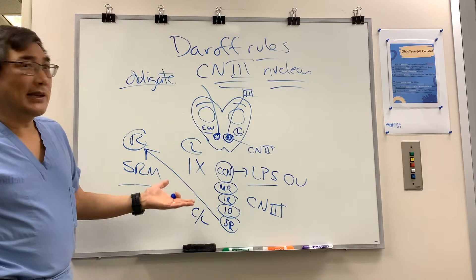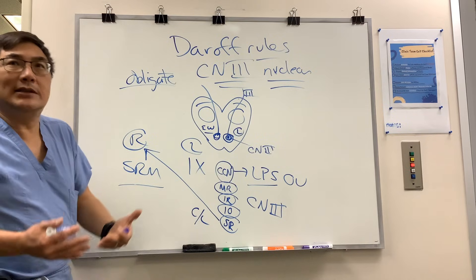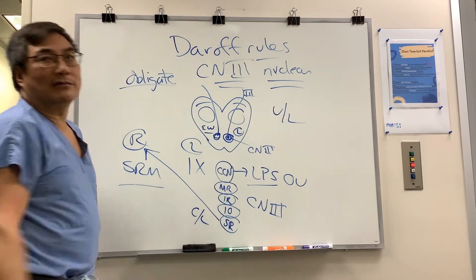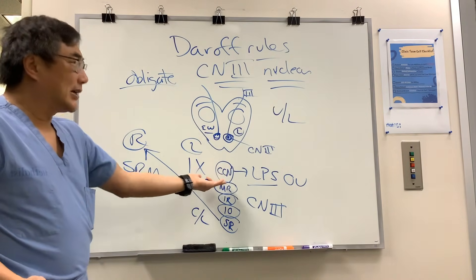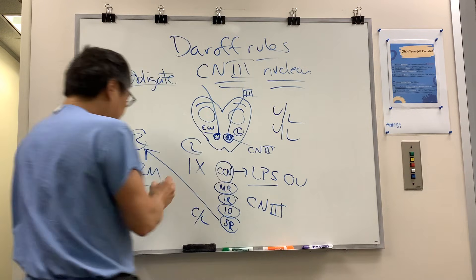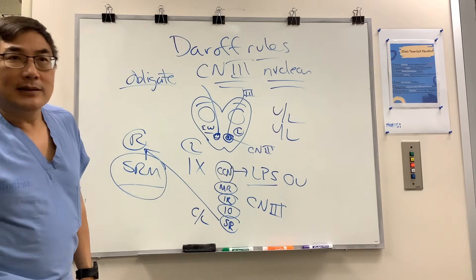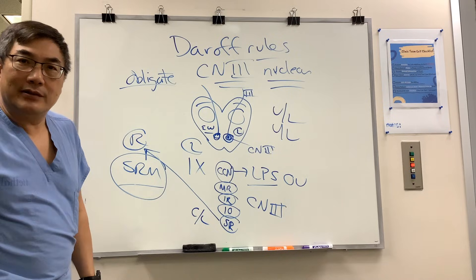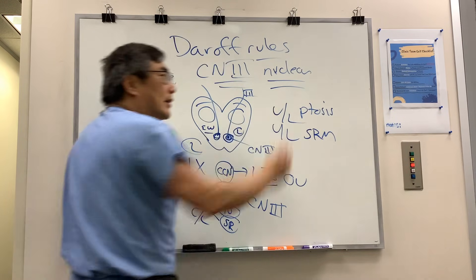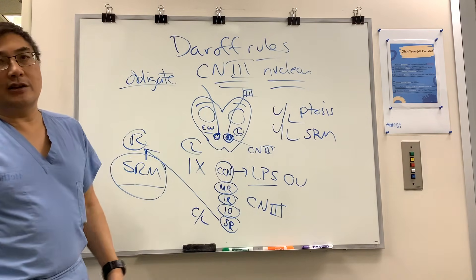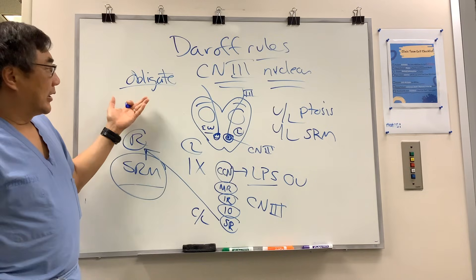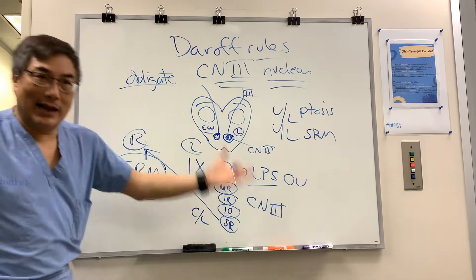That means there are also findings that cannot be nuclear — obligate not nuclear palsies. So what is an obligate not nuclear? It's just the opposite. A unilateral ptosis cannot be nuclear because there's only one single central caudal nucleus. Similarly, if the superior rectus involvement is unilateral and spares the other side, that cannot happen from a nuclear lesion either. So unilateral superior rectus deficit and unilateral ptosis are obligate not nuclear.